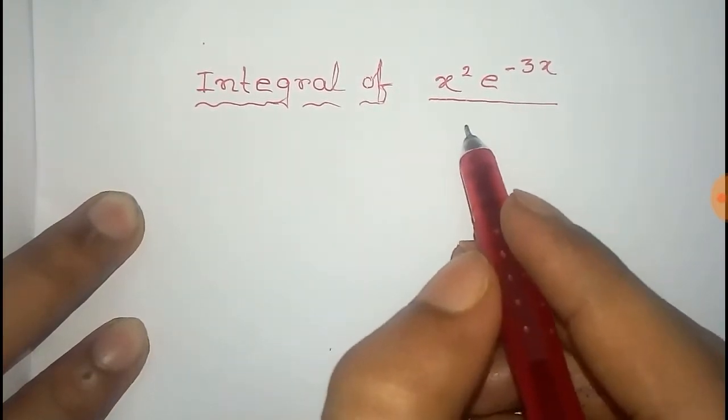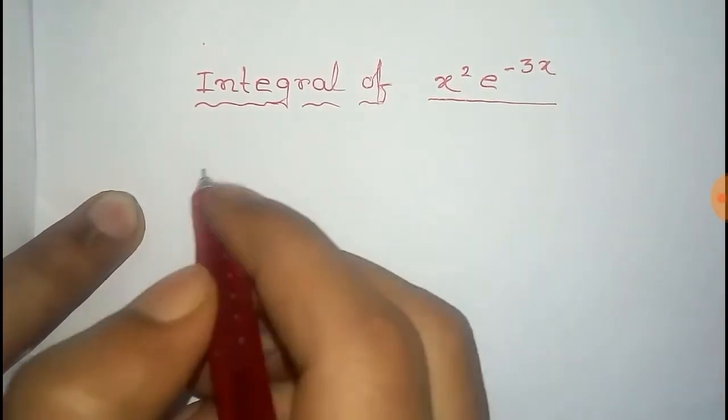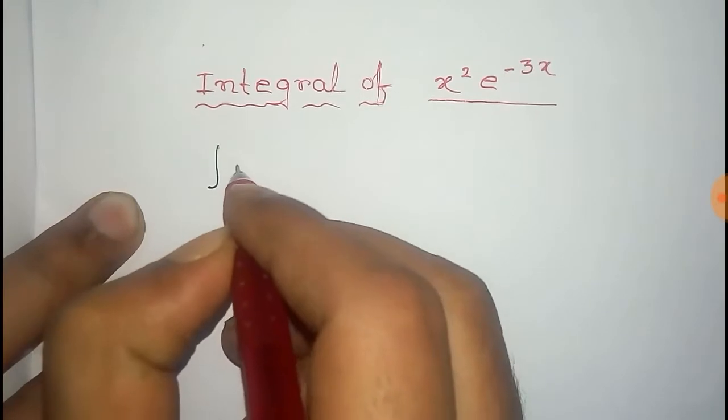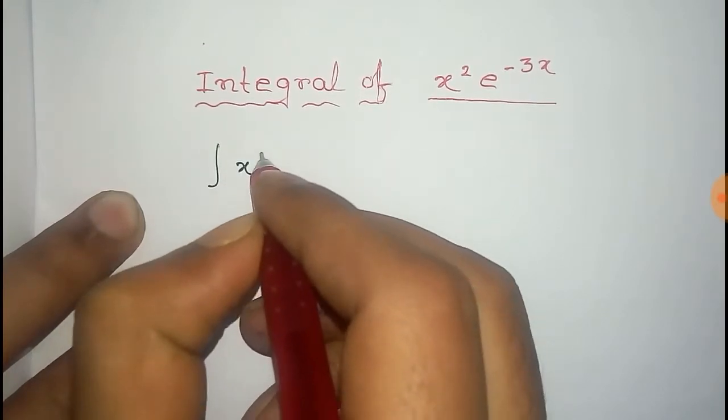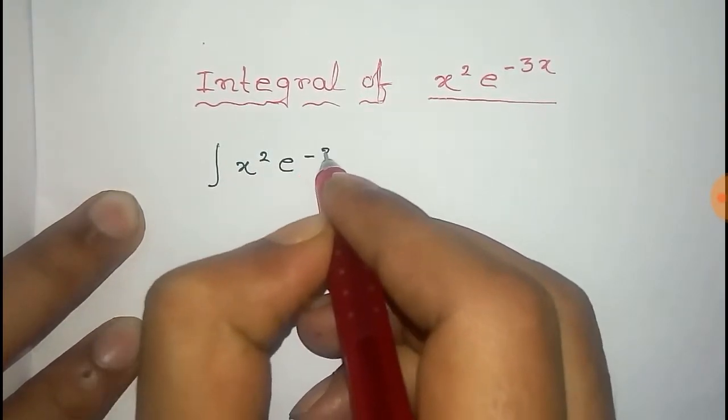In this video, we will find the integral of x squared e to the power minus 3x. That is the integral of x squared e to the power minus 3x dx.